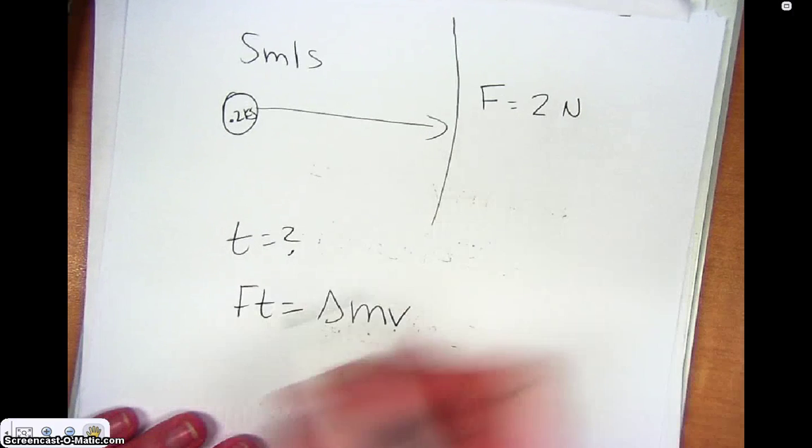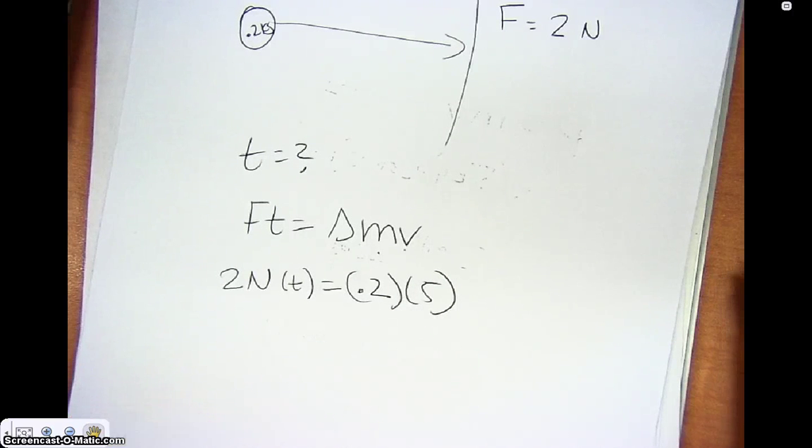So here we would just have Ft equals the change in mv. Well, the mass isn't going to change, it's just going to be the velocity that changes. And the velocity is going to go from an initial of five to a final of zero. So force is two newtons times t equals the change in mv, so 0.2 times five. So if I plug that in, I actually think I get one-half. So it takes a half a second in order to stop that egg by applying that force.